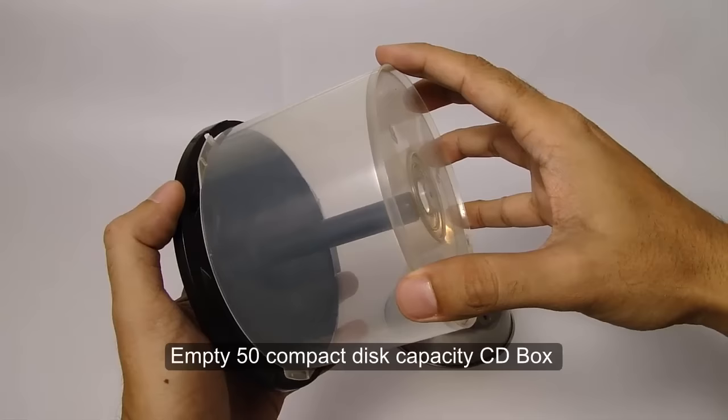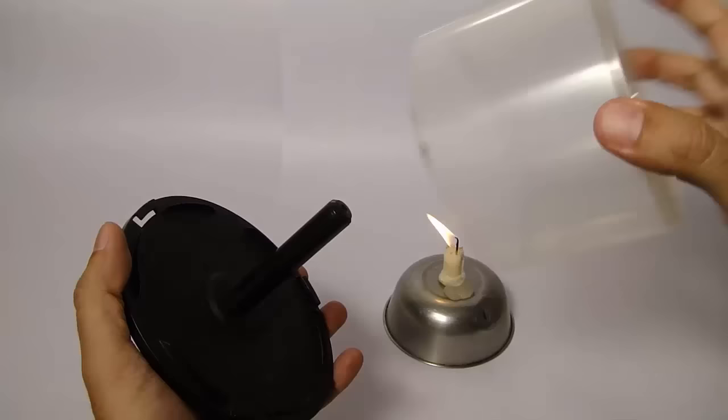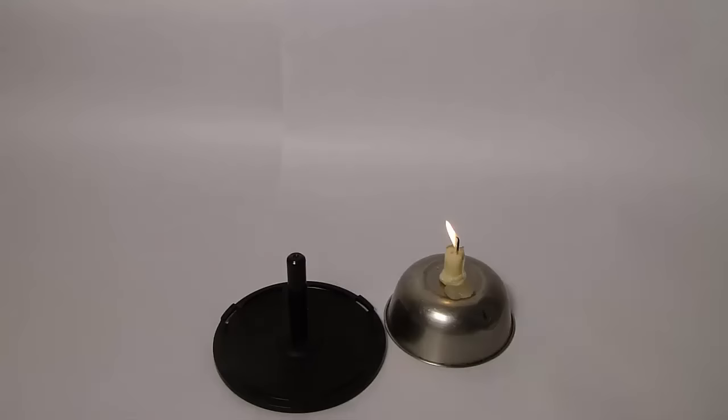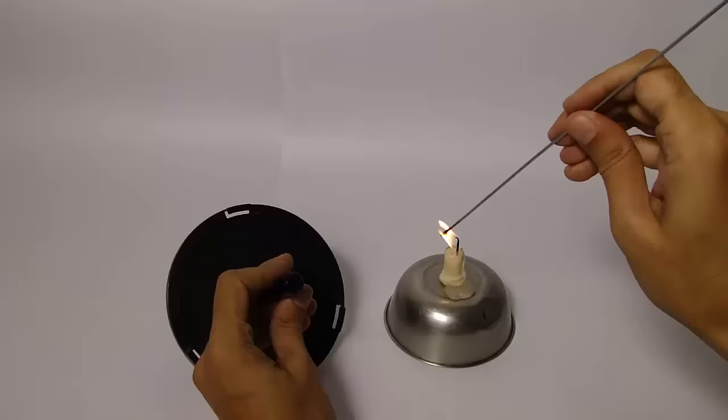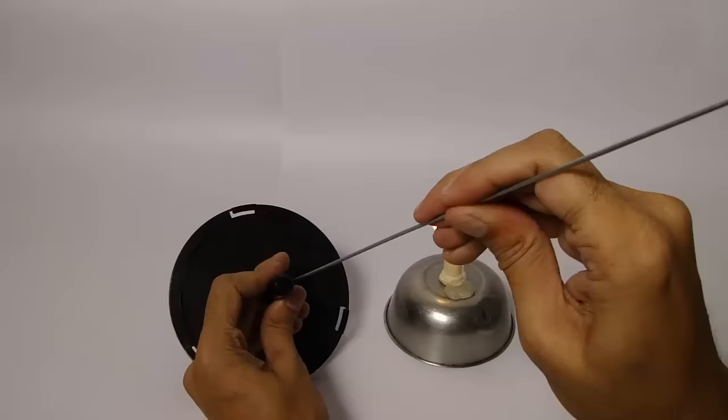Now you need a CD box. Heat the bottom and leave the cap. Now heat the spoke and insert it into the bottom of the CD case, which will become the base of the globe.